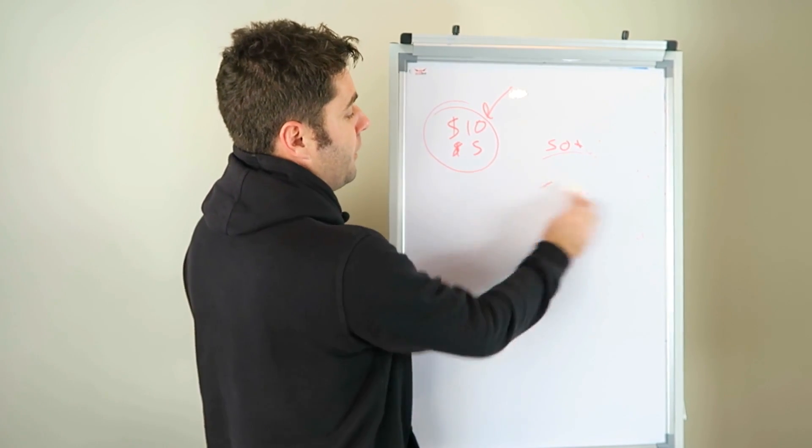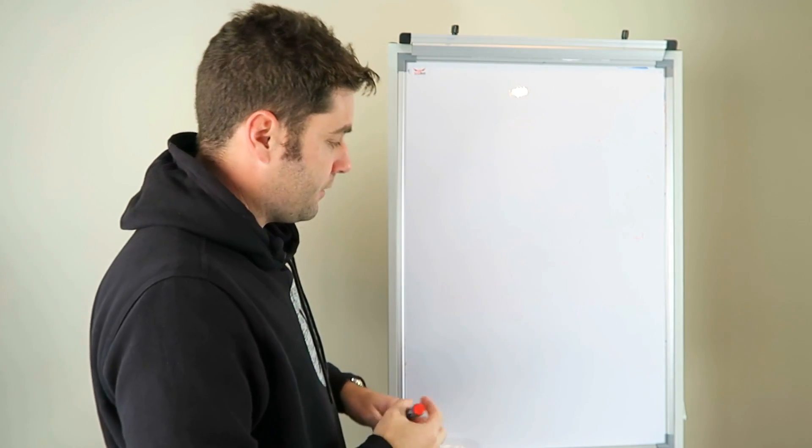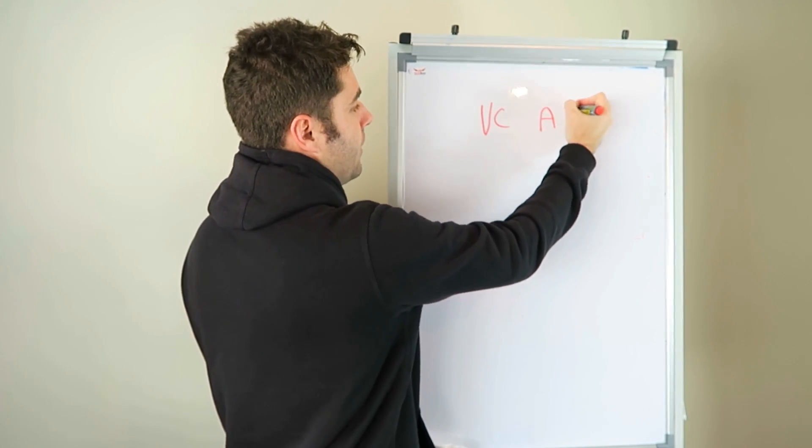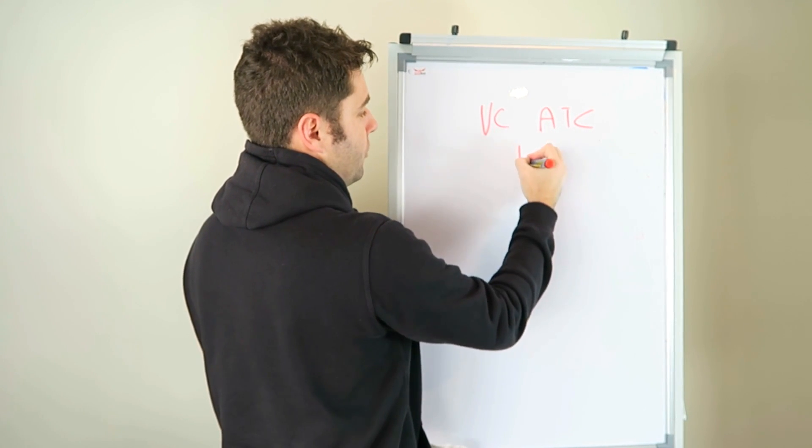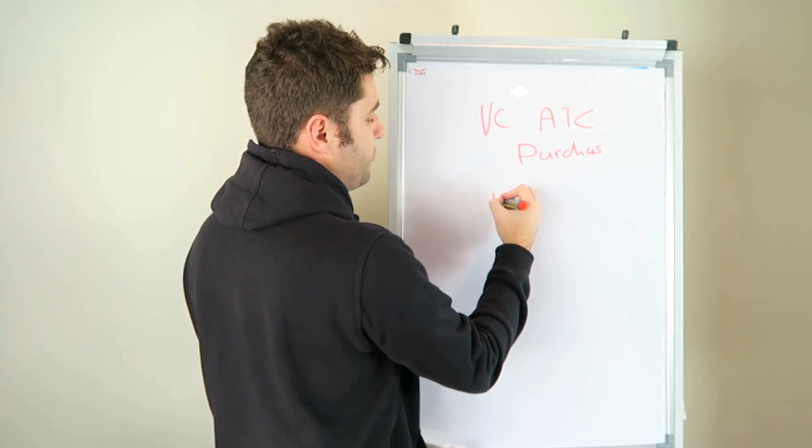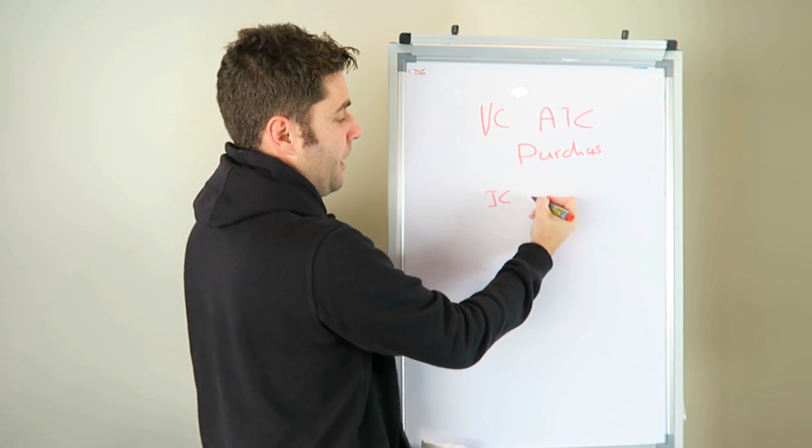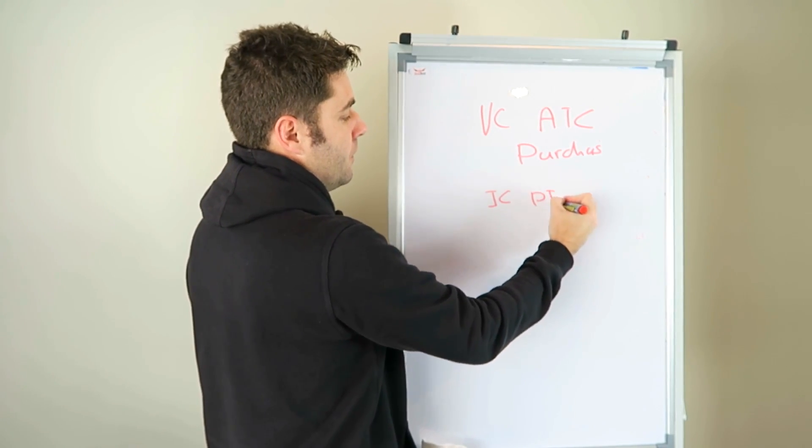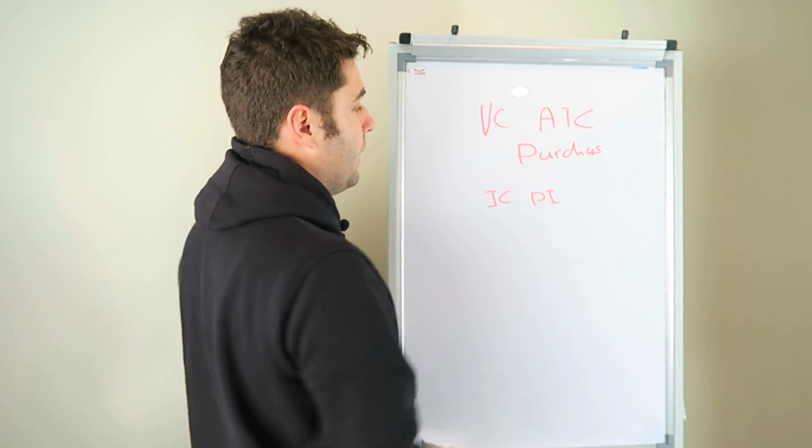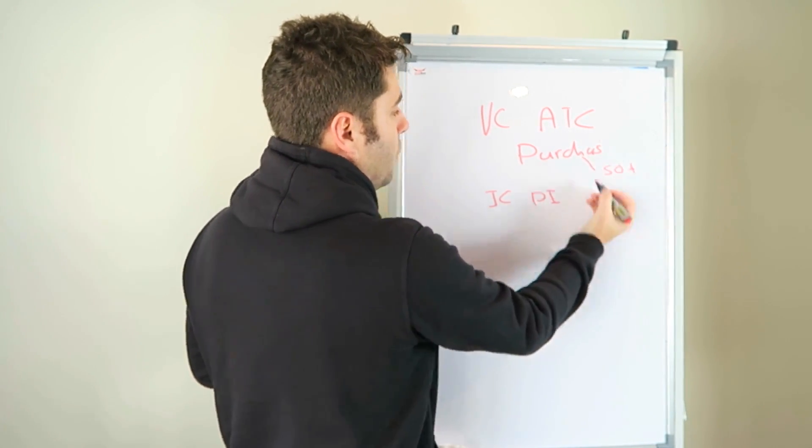Now, another thing guys, before we jump into kind of $5 ads and stuff is you've got to realize that view content. So there's view content, there's add to cart and there's purchase. That's the main ones. Then we have things like initiate checkout, in between add to cart and purchase and put in payment info. Now you've got, so a lot of people are coming in and they're staying with a purchase and they're like, what do I do if I need 50 plus a week now?